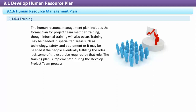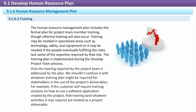The Human Resource Management Plan includes the formal plan for project team member training, though informal training will also occur. Training may be needed in specialized areas such as technology, safety, and equipment, or it may be needed if the people eventually fulfilling the roles lack some of the expertise required by that role. The training plan is implemented during the Develop Project Team process. Only the training required by the project team is addressed by the plan. We should not confuse it with whatever training plan might be required for stakeholders in the use of the project deliverables. For example, if the customer will require training sessions on how to use a software application created by the project, that training and whatever activities it may require are treated as a project deliverable.